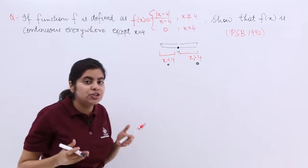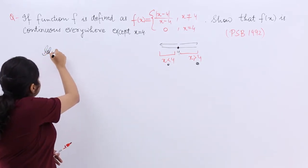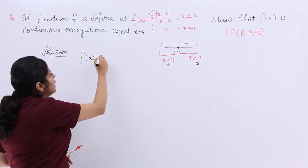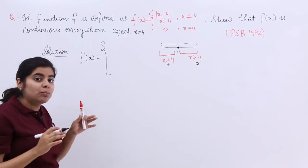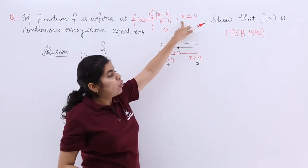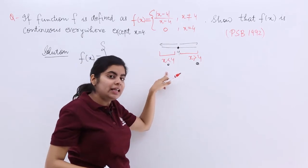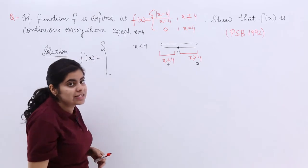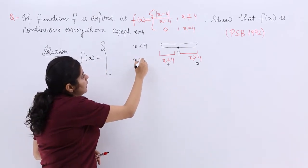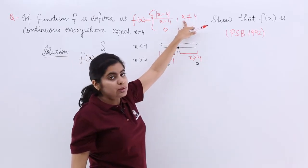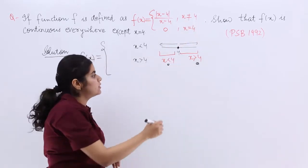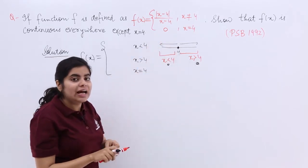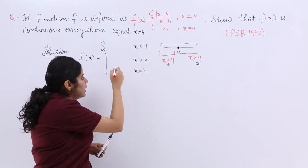Now let's split the function into three categories. For the solution, f(x) is split into: x less than 4, x greater than 4, and x equal to 4. When x is equal to 4, the value is directly given as 0.